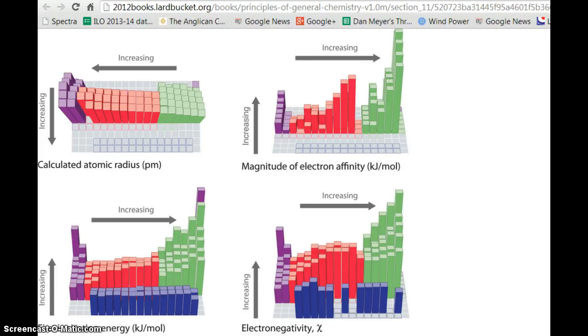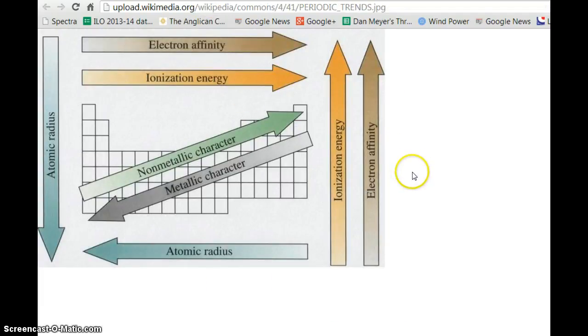The sheet that Ms. C was trying to show you tries to combine all of these trends in one sheet. As you go down the periodic table, the atoms get bigger. As you go across the periodic table, from left to right, it gets smaller.